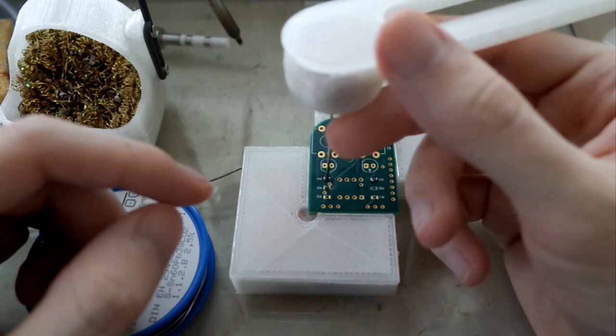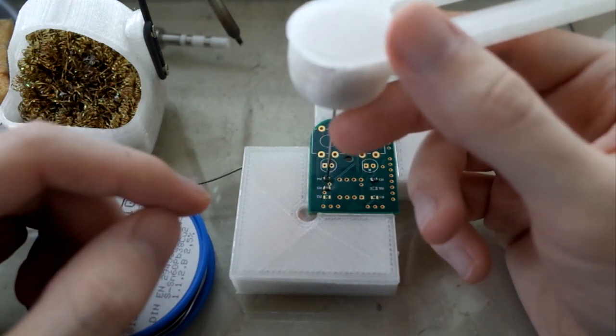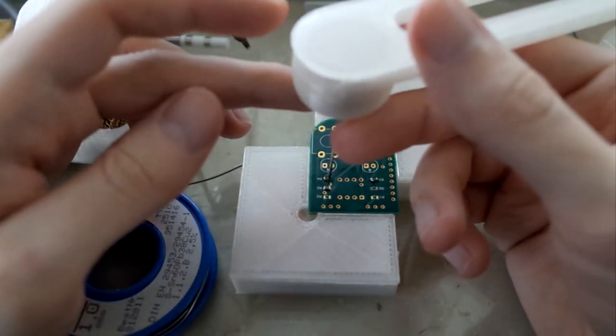The best way in my opinion is to position the part on the pad and then simply use the soldering iron with a flattened tip to solder both sides.